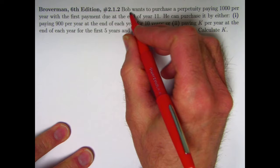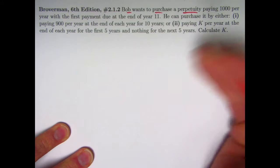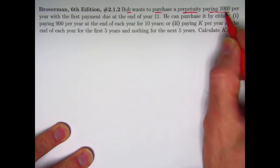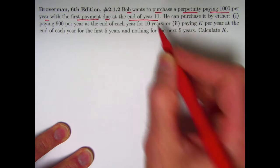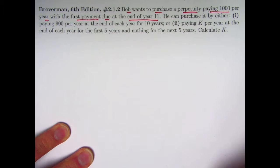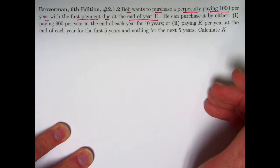So here's the problem. Bob wants to purchase a perpetuity, an annuity that goes on forever, that pays him $1,000 per year with the first payment due at the end of year 11. So starting 11 years from today, he's going to get $1,000 every year forever.